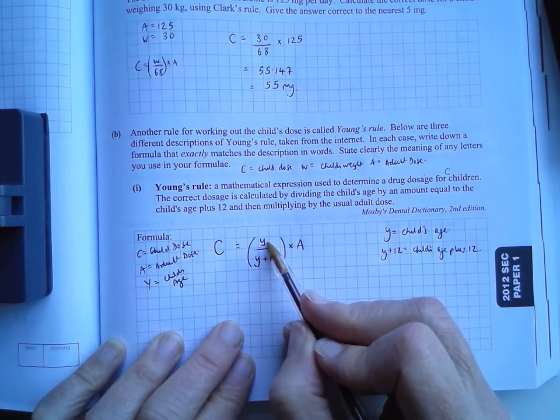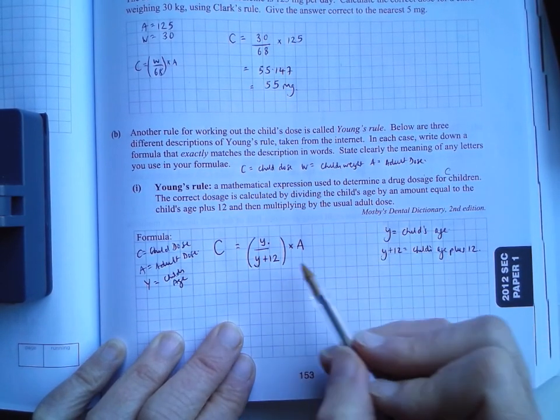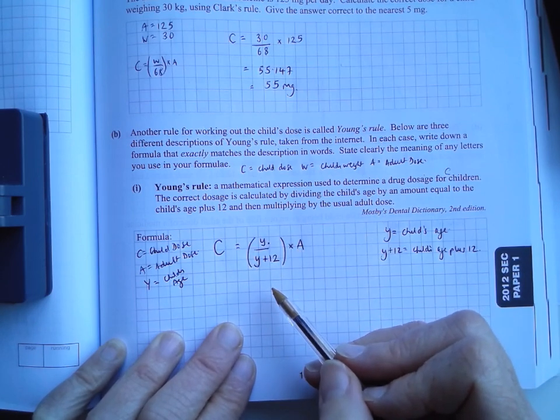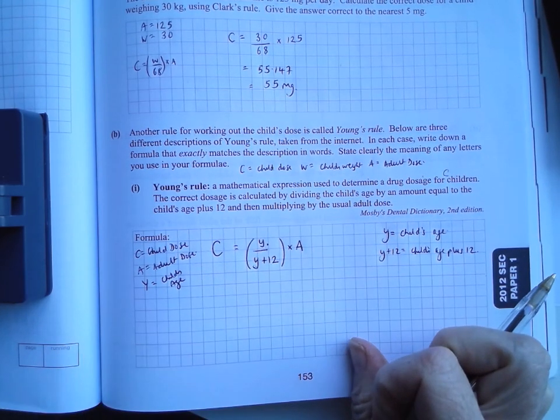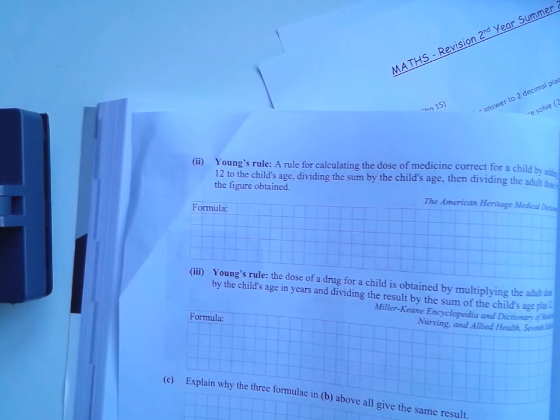So what I'm going to do is put that in brackets. So we know we have to do that first. And then we have to multiply by A, which is the usual adult dose. The child's age, which was Y, divided by the child's age plus 12, which is Y plus 12. And then multiply by the adult dose. That's tough going. Over the page. Young's rule. A rule for calculating the dose of medicine.